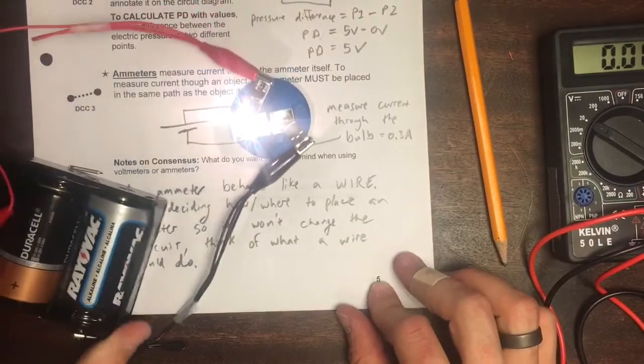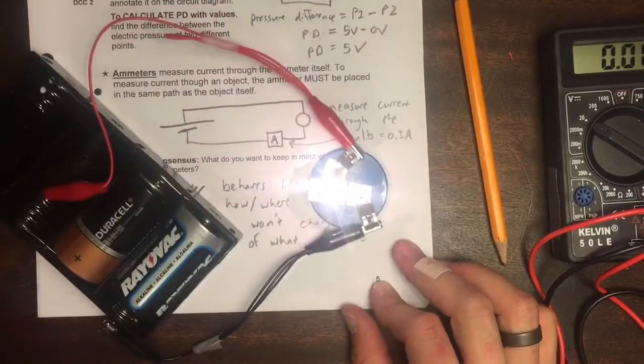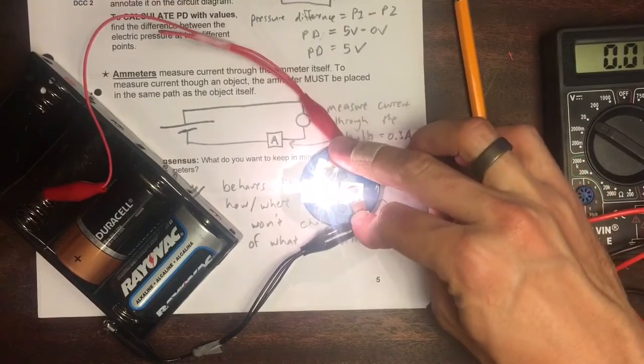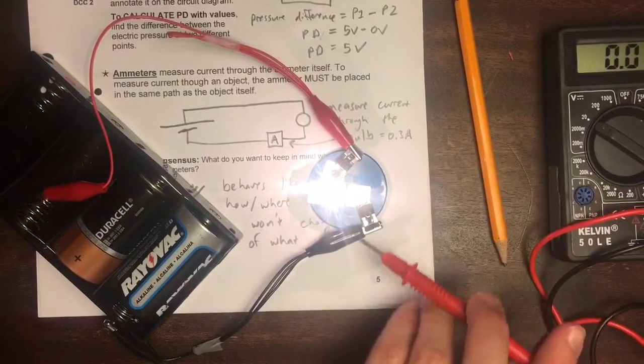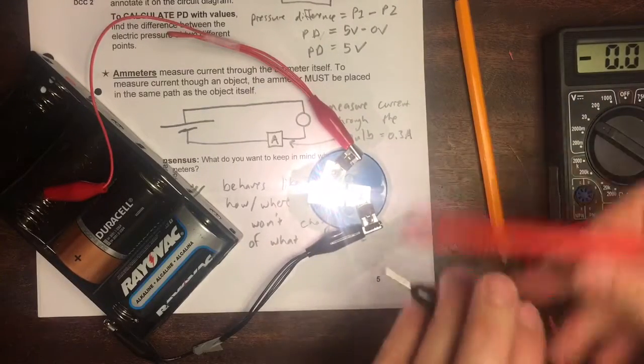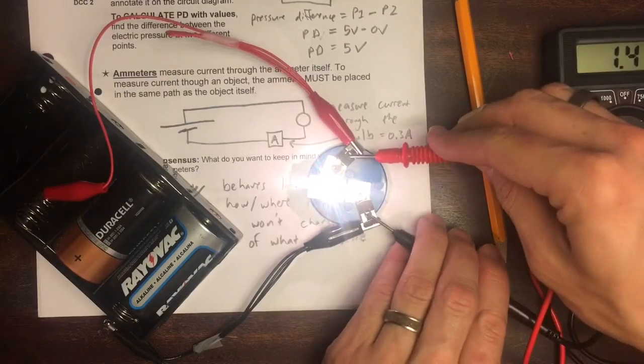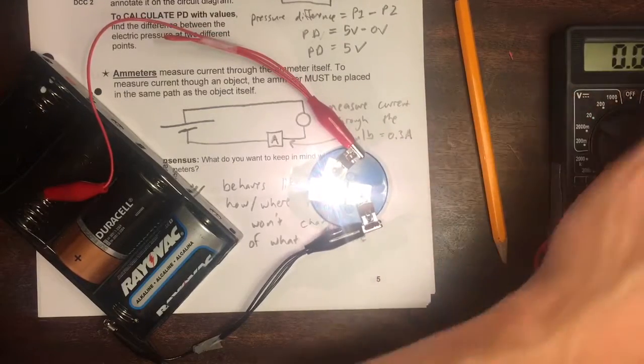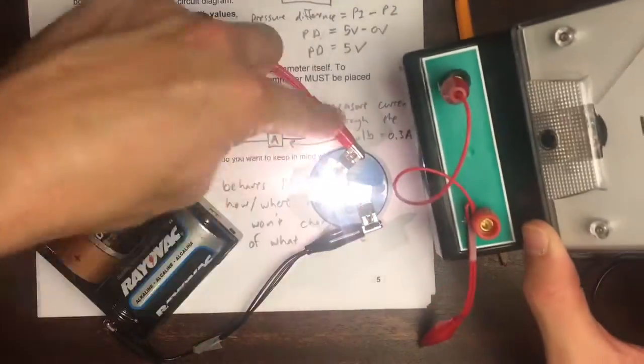I'll leave this up so you can copy down those notes if you don't have them yet. You can imagine someone trying to hook up an ammeter the way a voltmeter would be hooked up. We saw a voltmeter gets hooked up like this across the bulb.